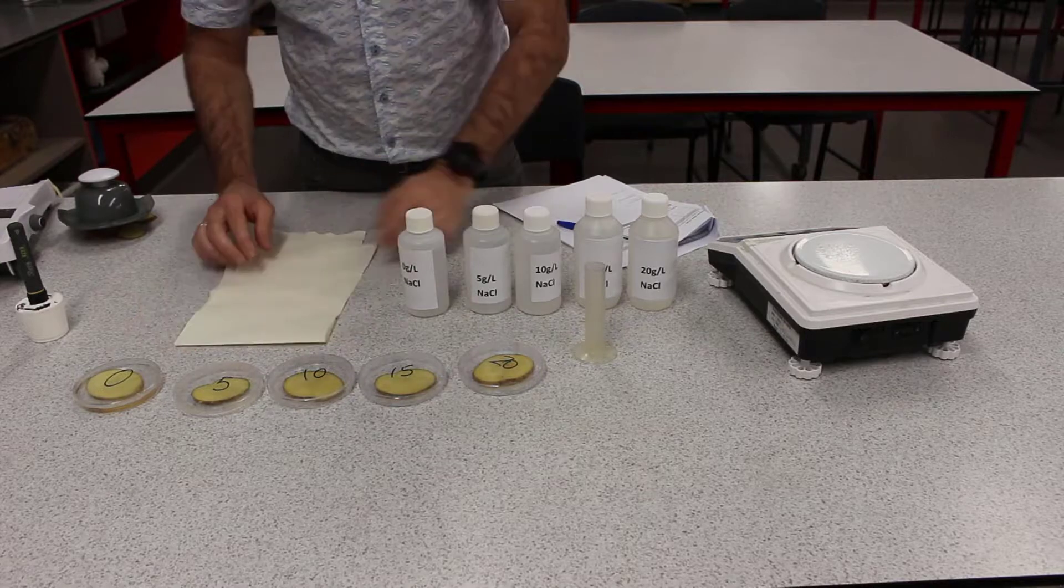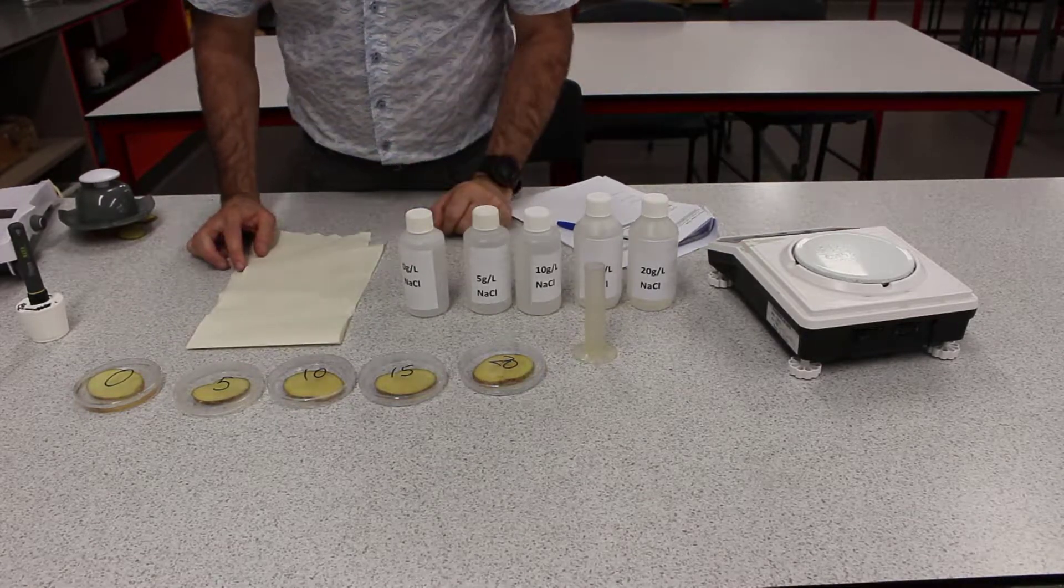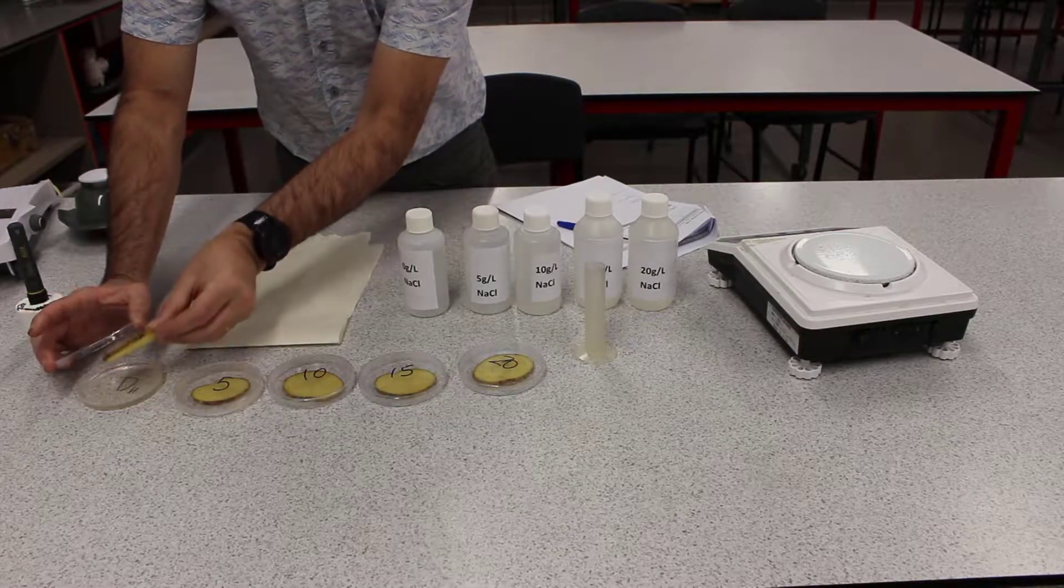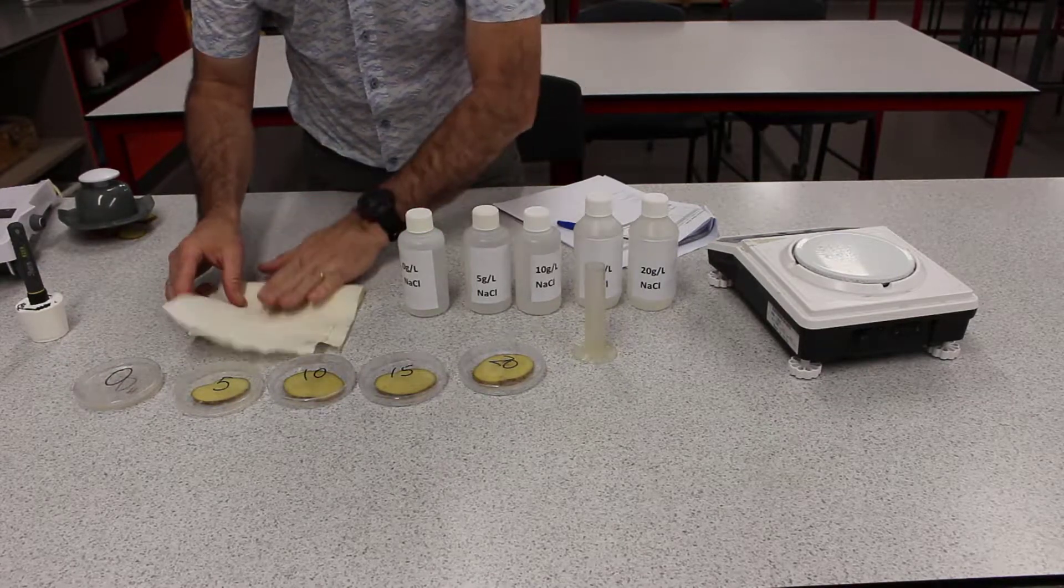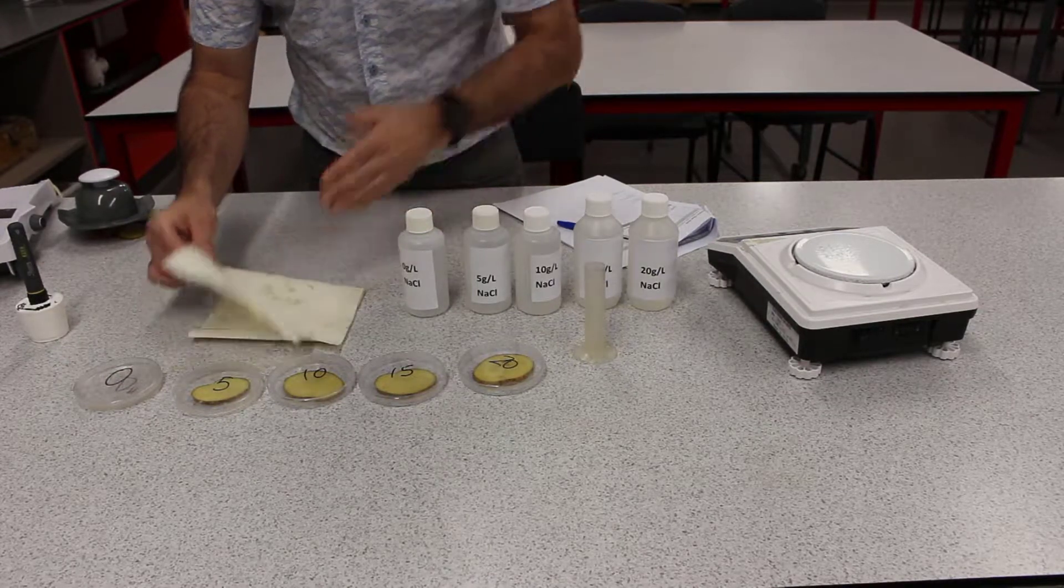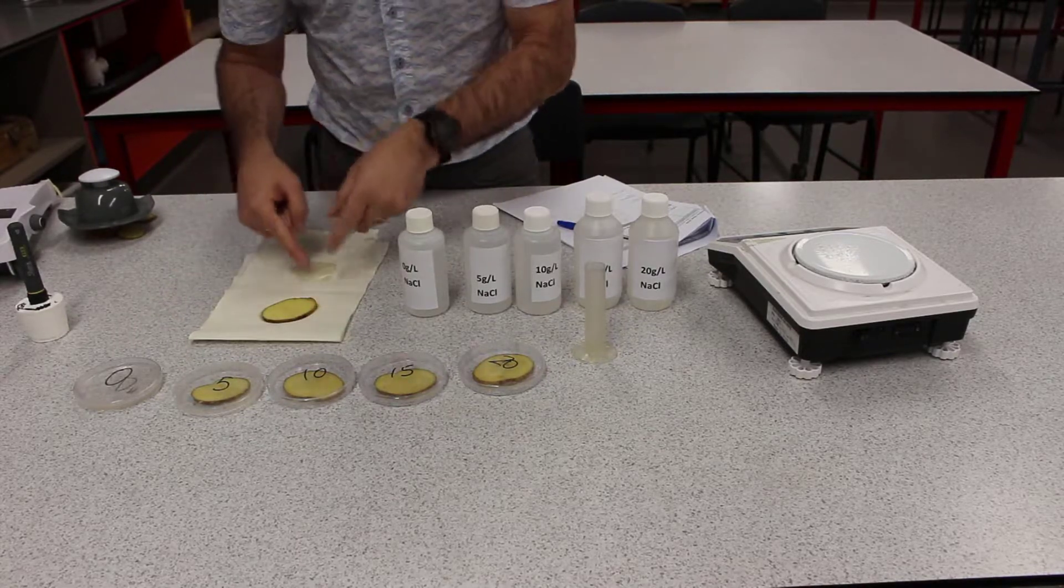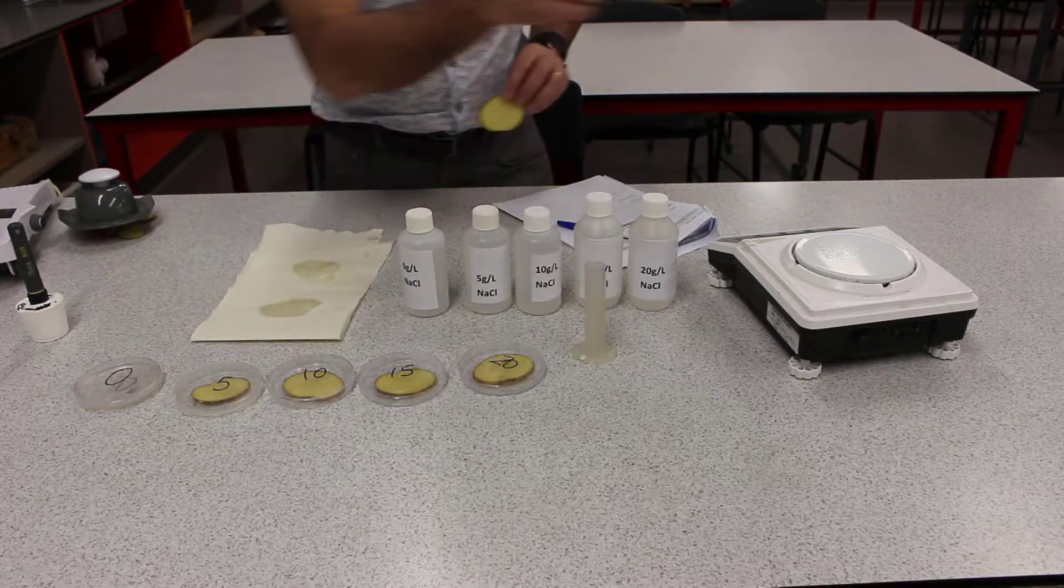After that period of time, you're going to get them all out and get the final mass. Now, what you need to do is make sure you pat them dry with some paper towel. Just very gently, but we don't want to measure the mass of the water that's on the outside. We're interested to see what's happening to the change in water on the inside. So just pat it dry.